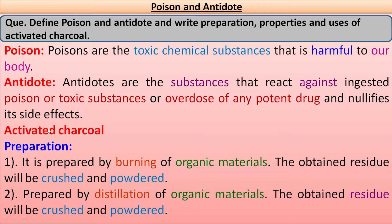Now we will study about activated charcoal. First is preparation. It is prepared by burning of organic material. When we burn any organic material, we obtain a residue. This obtained residue will be crushed and powdered. This powdered material is known as activated charcoal.